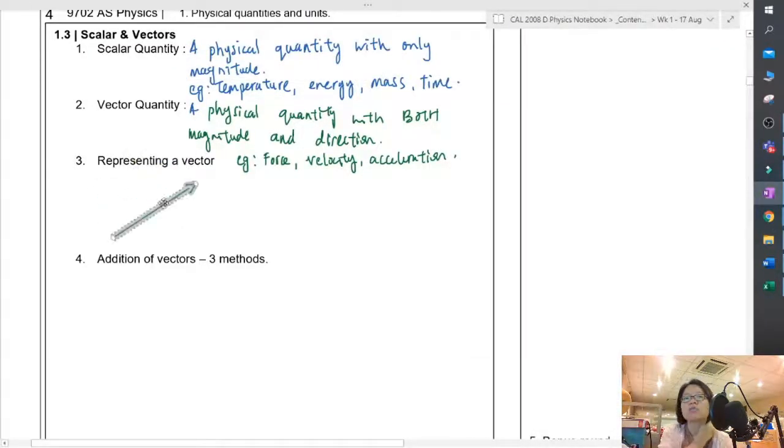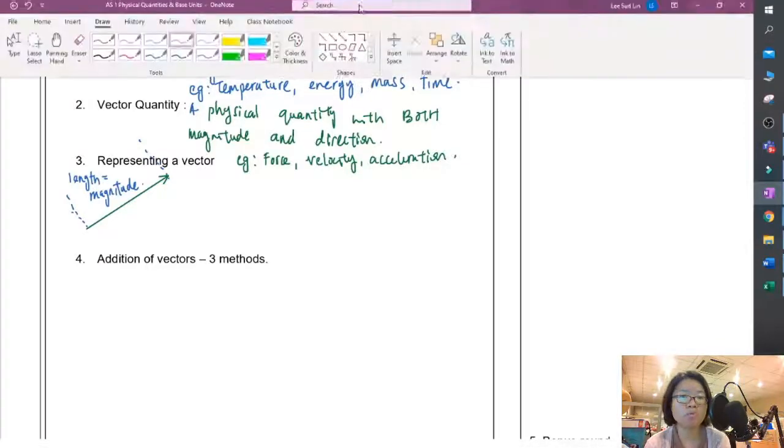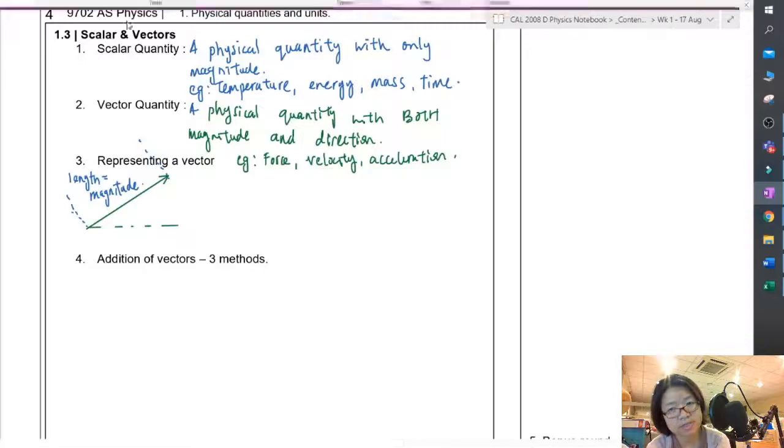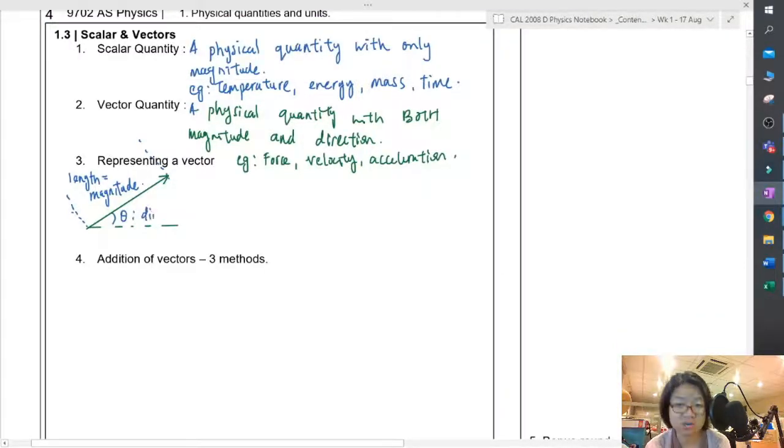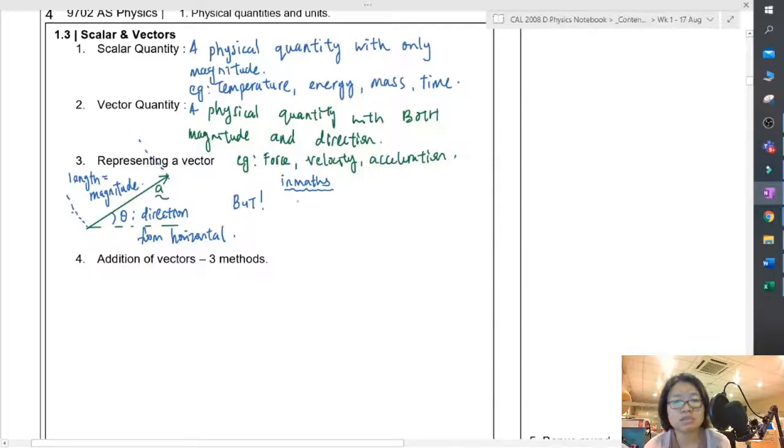When it comes to this arrow, normally the length of the arrow would represent the magnitude of the vector. For example, if this vector is like 2 newton, maybe we want to draw 2 cm, it can be 20 cm, the scale is up to you. But the length is used to represent the magnitude. And since it has both magnitude and direction, when we represent or when we talk about the direction, we usually in A-levels physics measure it from the horizontal axis or measure it from another force that is in the diagram. Let's say we take theta as the direction from the horizontal.